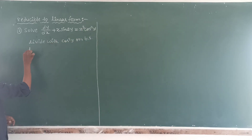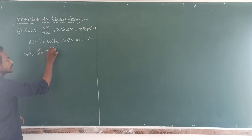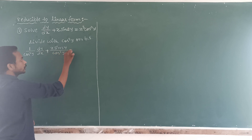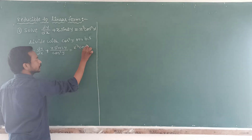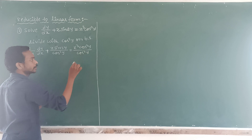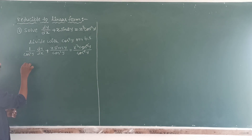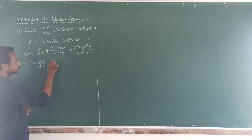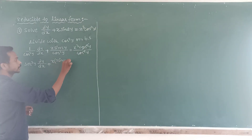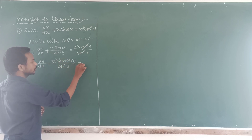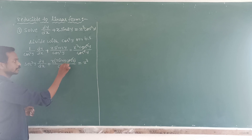If we divide by cos^n(y), it will become (1/cos^n(y)) · dy/dx plus x·sin(y)/cos^n(y) equals x · (1/cos^n(y)). Now cos^n(y) will cancel, and 1/cos^n(y) can be expressed as sec^n(y) · dy/dx, plus x into sin(y)/cos^n(y) equals x·q. One cosine factor here will be cancelled.